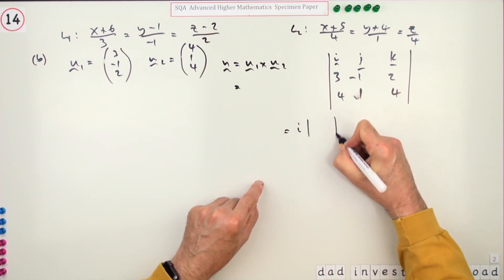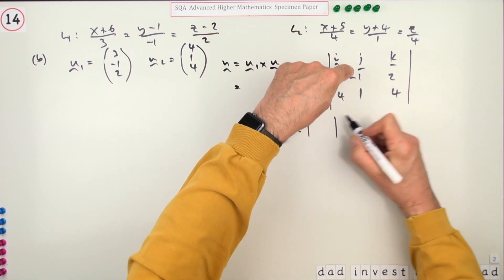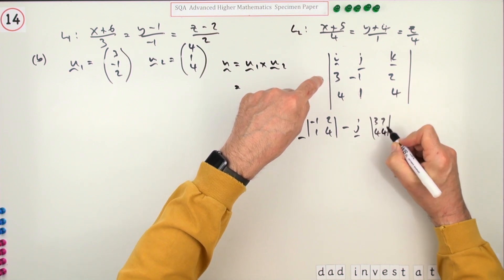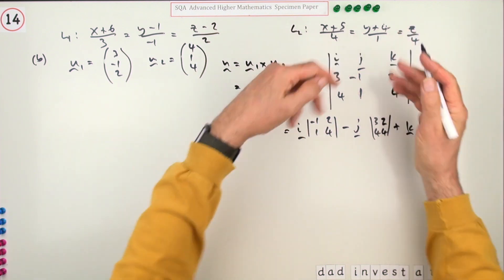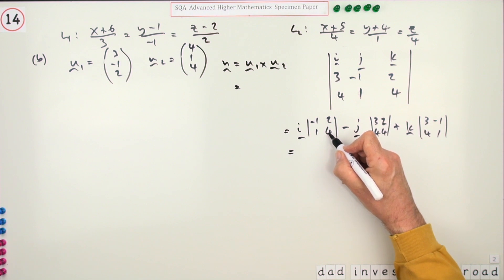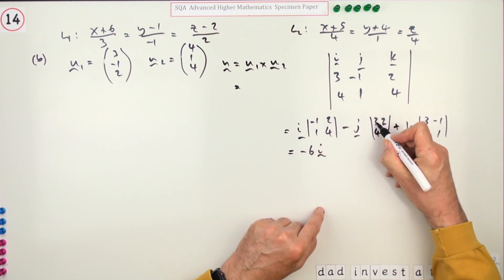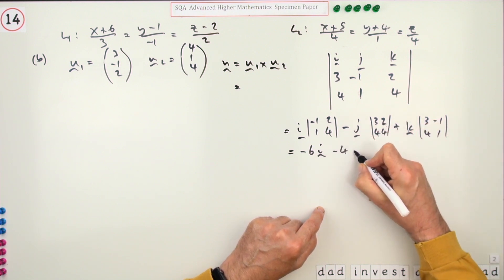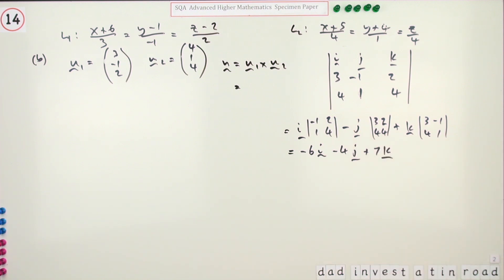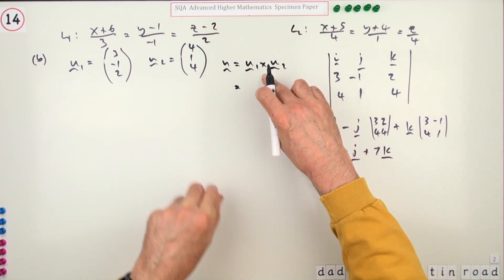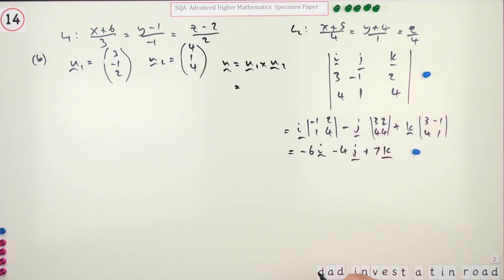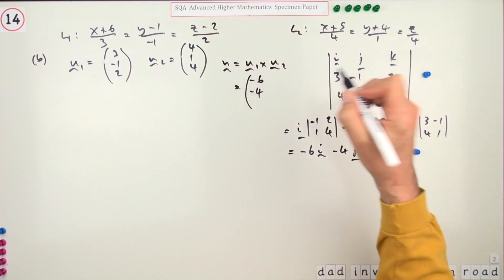The normal to the plane is u1 cross u2, computed using the determinant with i, j, k. Setting up: i times the minor of (-1, 2; 1, 4) minus j times the minor of (3, 2; 4, 4) plus k times the minor of (3, -1; 4, 1). Working out: main diagonal minus opposite diagonal gives negative four minus two equals negative six for i; twelve minus eight equals four, so minus four for j; and three minus minus four equals seven for k. The normal vector is (-6, -4, 7).